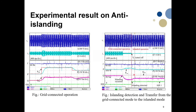When islanding is detected, the system disconnects the grid-connection circuit breaker, isolating the microgrid from the grid and supplying power to the local load. The current to the grid becomes zero, but the inverter still maintains voltage and supplies power to the local loads — here the local load is 450 W. We also see that the inverter, which was supplying 50 VAR of reactive power, is now consuming some reactive power.